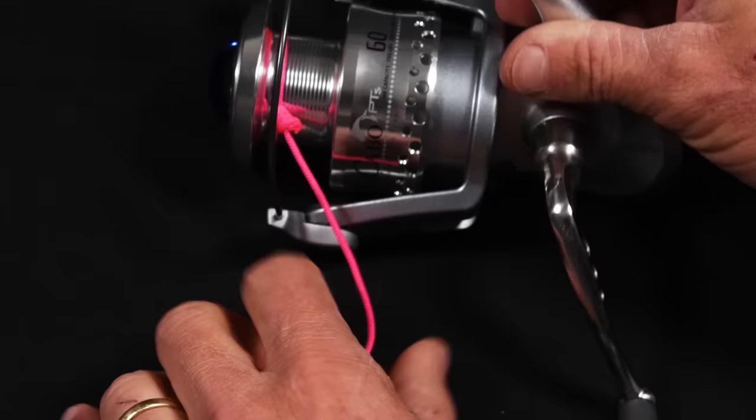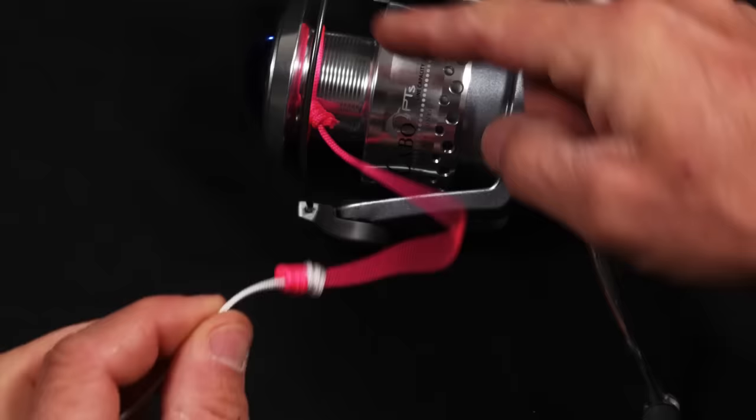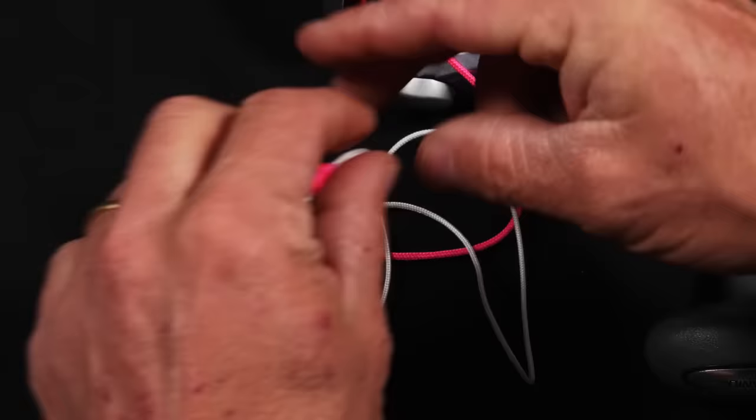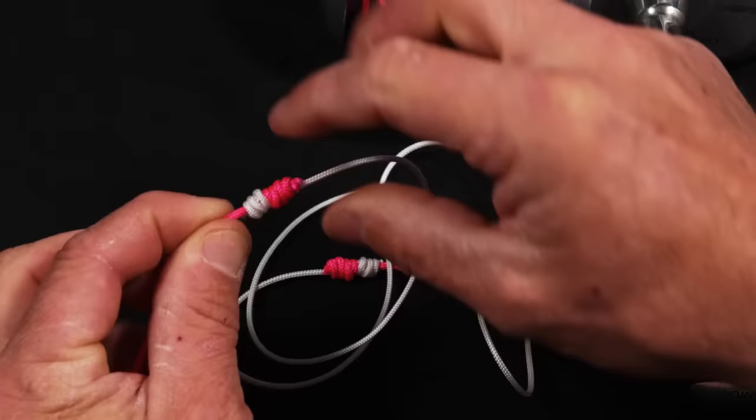Uni knot to the spool of the reel. Double Uni knot from the monofilament backing to the braid or all monofilament, whatever you prefer. There's a double Uni knot, so we would put all of that there. Another double Uni knot if necessary from the braid to your fluorocarbon leader.